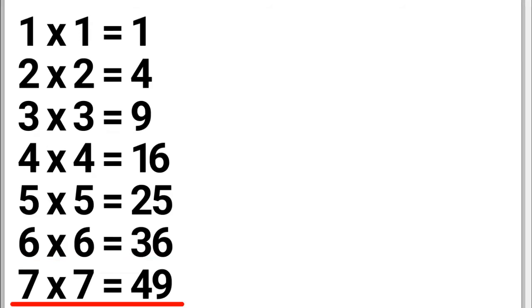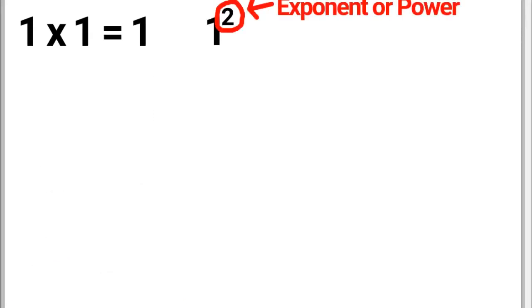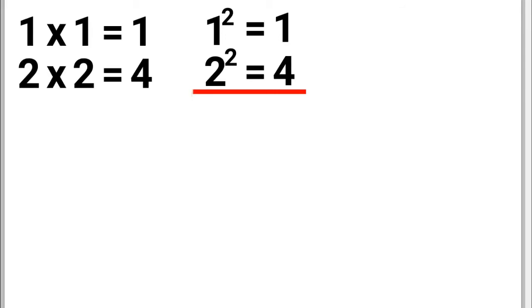Another way to express these multiplications is by using an exponent. For example, 1 to the power of 2, also called 1 squared. 1 squared equals 1. 2 squared equals 4.